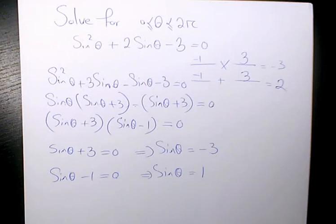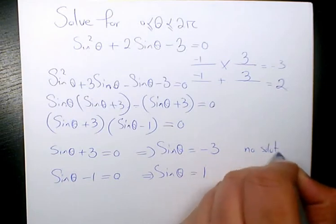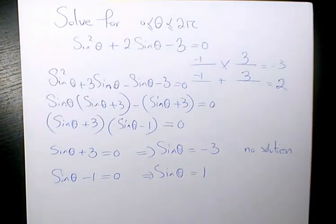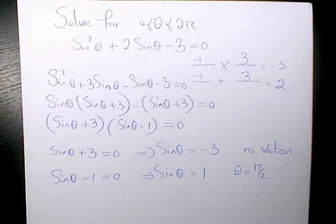So negative 3 is not possible, and there is no solution because it is less than negative 1. Here we have sinθ = 1. We know when theta equals to π/2, sin(π/2) will be 1. So this is going to be the only answer to this trigonometric equation.